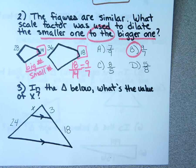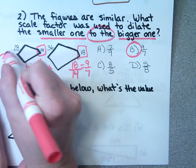Why wouldn't you do 36 over 28? You can't? Well, if I would have done 36 over 28, that would reduce to give me nine sevenths. So it doesn't matter — we just needed to pick a set of sides.